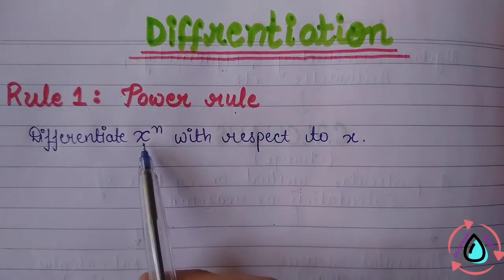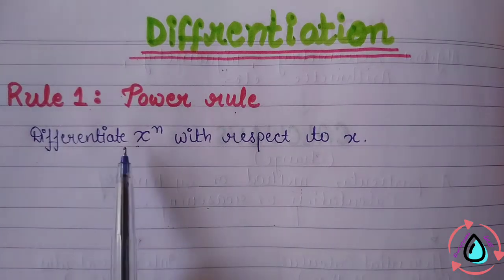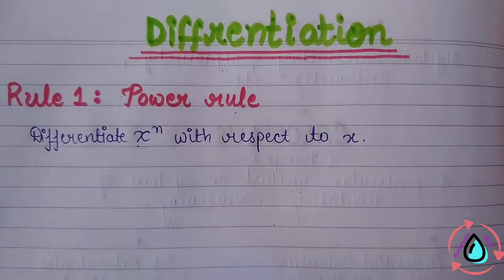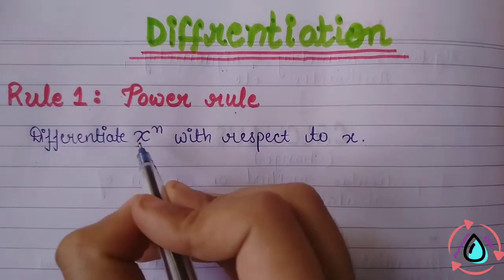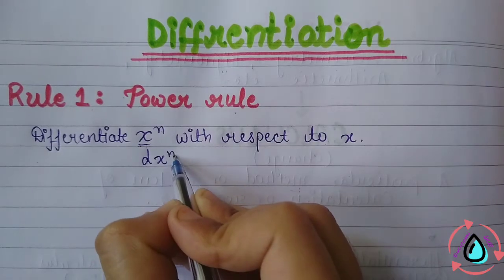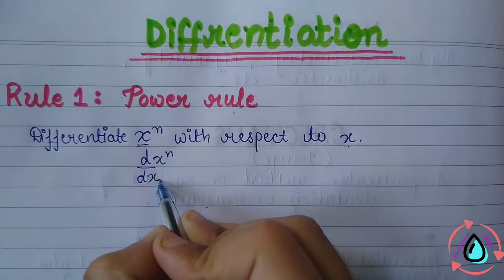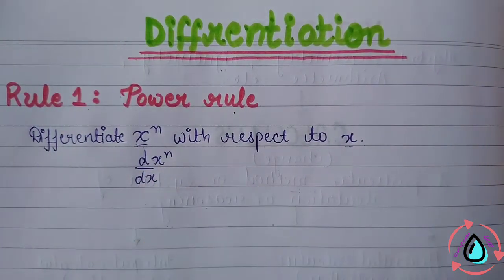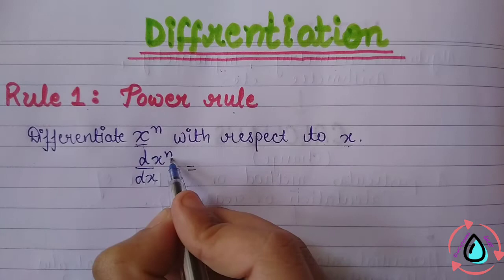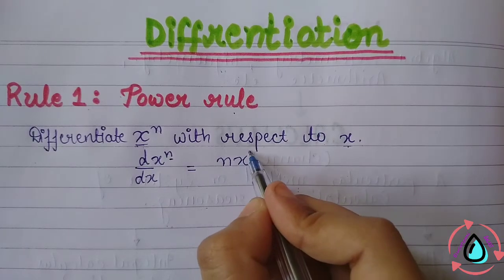In the Power Rule, when we have to differentiate x to the power n with respect to x, we write d(x^n)/dx. To differentiate x^n, we bring the power n to the front, keep x as it is, and reduce the power by 1 — meaning the power becomes n minus 1. So the derivative of x^n is n·x^(n-1).